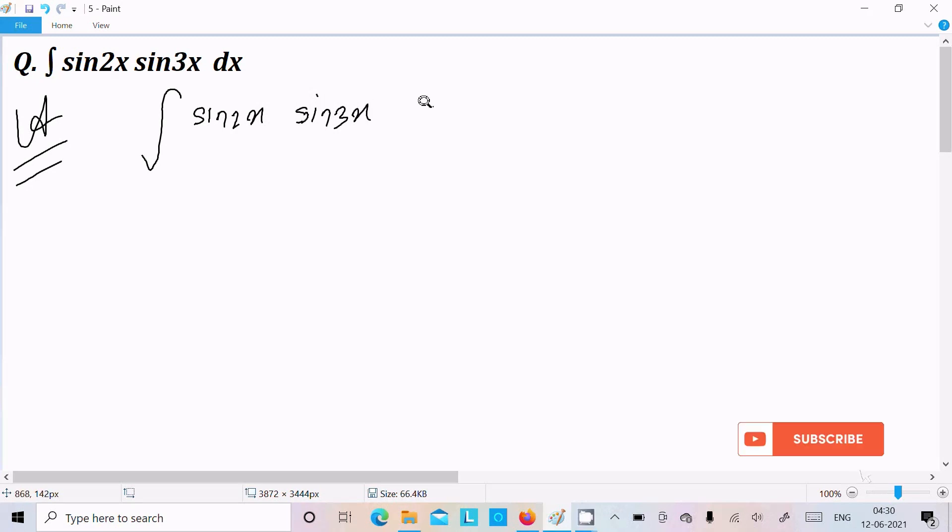So we can achieve this output very easily if I multiply with numerator 2 and denominator 2. Thereafter it's in the form 2 sin a into sin b, so here we can write this as 2 sin 3x into sin 2x divided by 2, here dx.